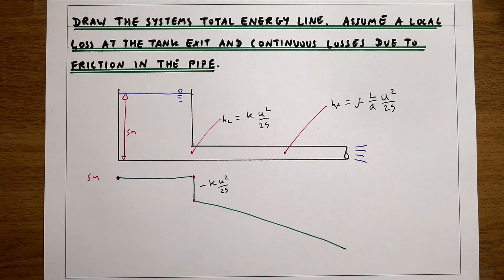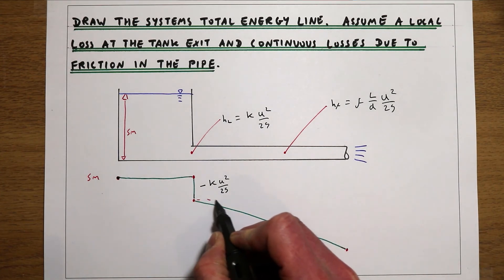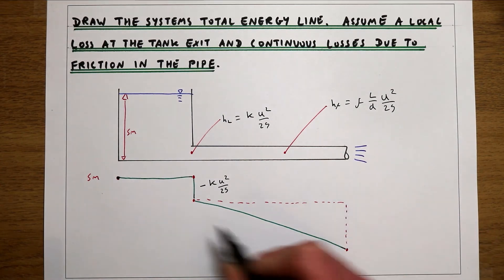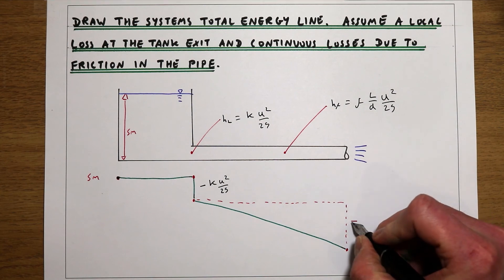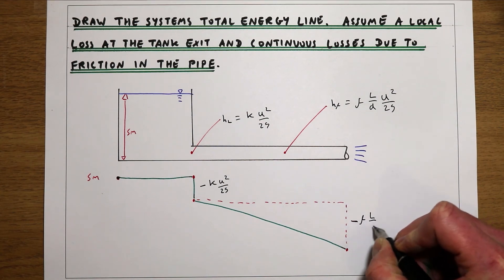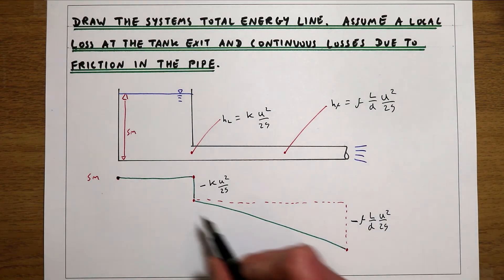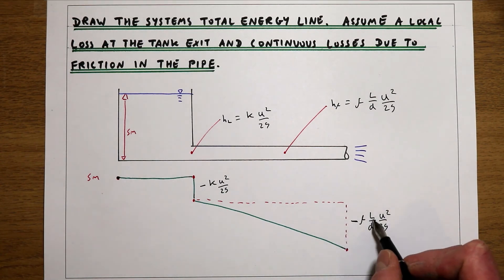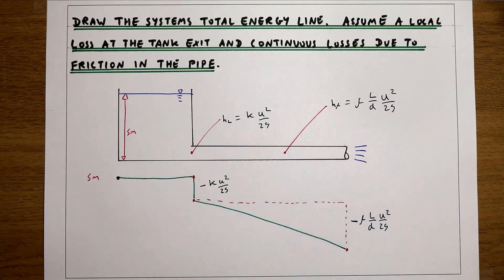If we think about how much energy we're losing as we go down the pipe, the total loss at the end of the pipe is going to be the friction factor times the total length of the pipe over d times u²/2g. So our loss keeps on increasing as L increases, but the total loss due to friction is f·L/d·u²/2g.